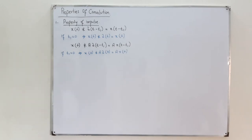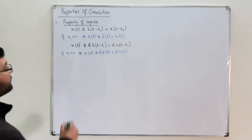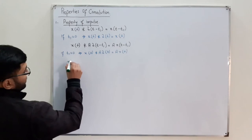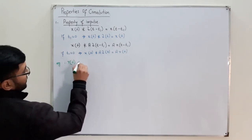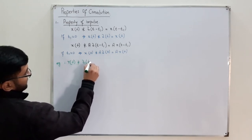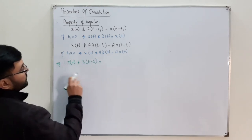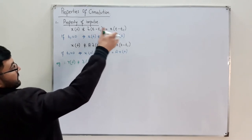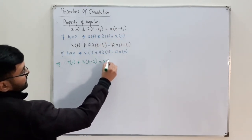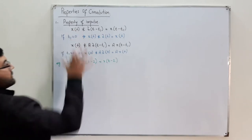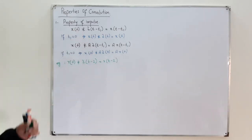This is the first property of the day. For example, if x(t) = r(t) and this is convolved with an impulse located at t − 2, you get x(t − 2), which means r(t − 2). You can confirm this by the conventional method and the answer would be the same.